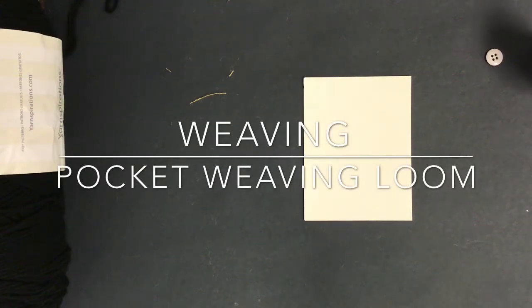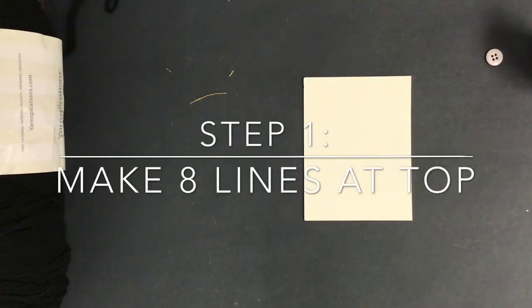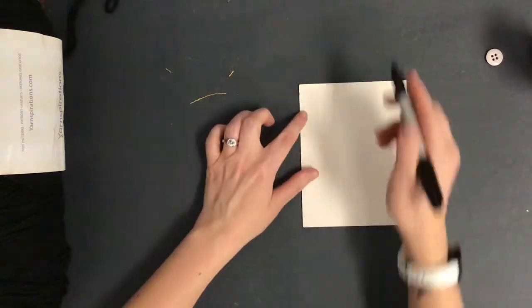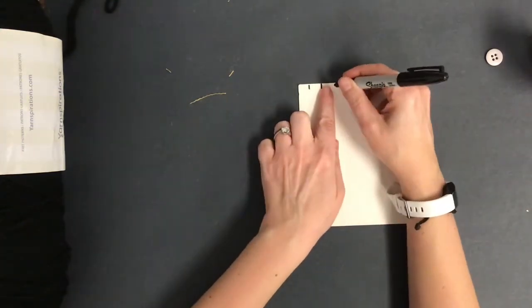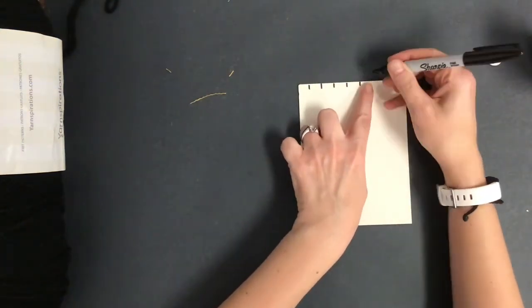Welcome back to my channel artists. Today we'll be making a pocket weaving loom. Step number one: make eight lines at the top. You want to make your lines about one half inch or one finger length apart.